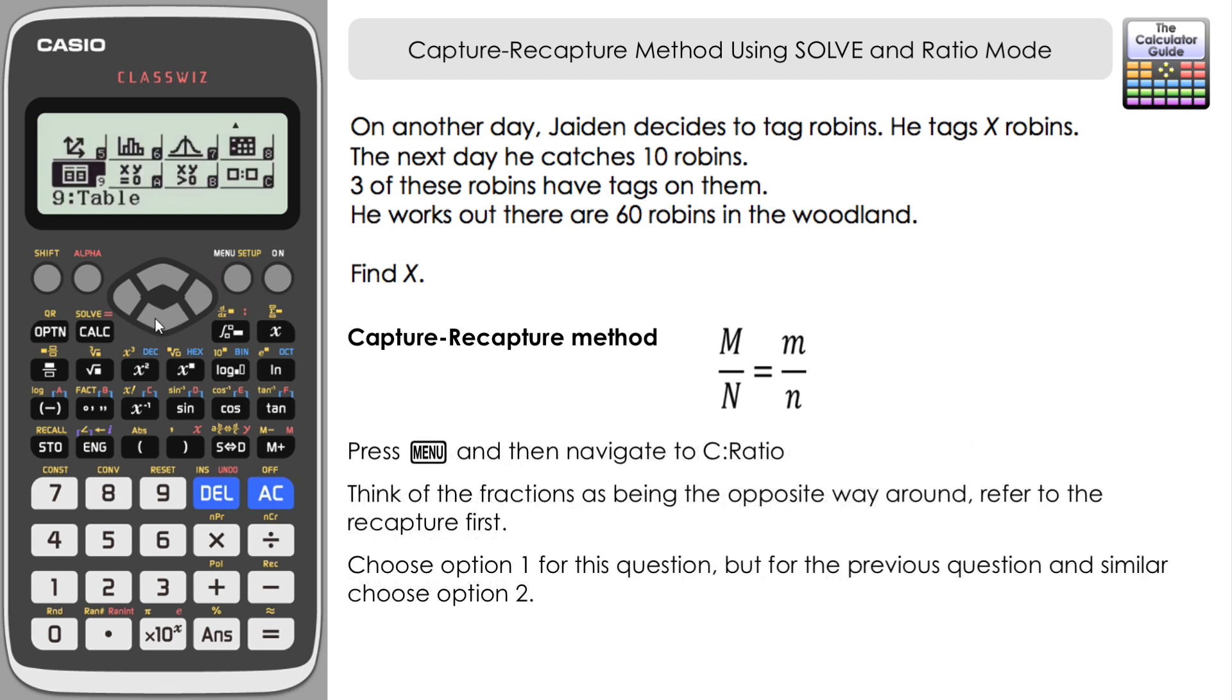So we can press menu and navigate to C Ratio. Now we do have to swap the fractions around this time. This will refer to the recapture first and then the capture, which is why it's probably not quite as comfortable the method, but it would still yield the same results. I'm going to choose option 1 here to resolve this question. If you were resolving the first question that we had, it would be better to choose 2 rather than 1, but we'll just answer this second part of the question. We're going to use option 1 here.